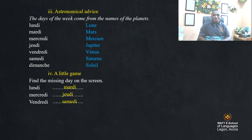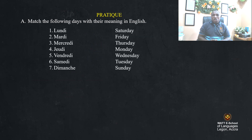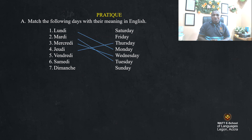Let's do this activity: match the following days with their meanings in English. Lundi, mardi, mercredi, jeudi, vendredi, samedi, dimanche correspond to Monday through Sunday. That's great!